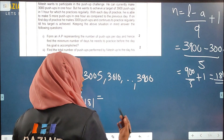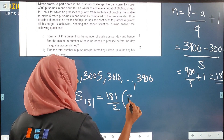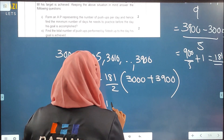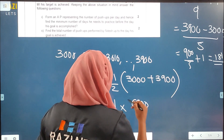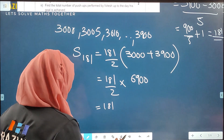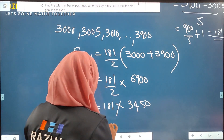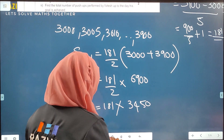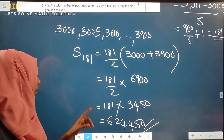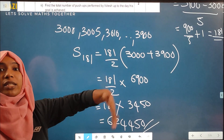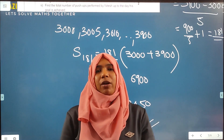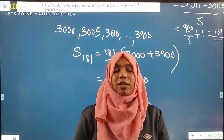Using the sum formula S = n/2 × (first term + last term), with n = 181, first term = 3000, last term = 3900: S = 181/2 × 6900 = 181 × 3450 = 624,450 push-ups. So the total number of push-ups from 3000 to 3900 with regular practice is 624,450. That is all — the sample paper of 2022 standard is completed and solved.